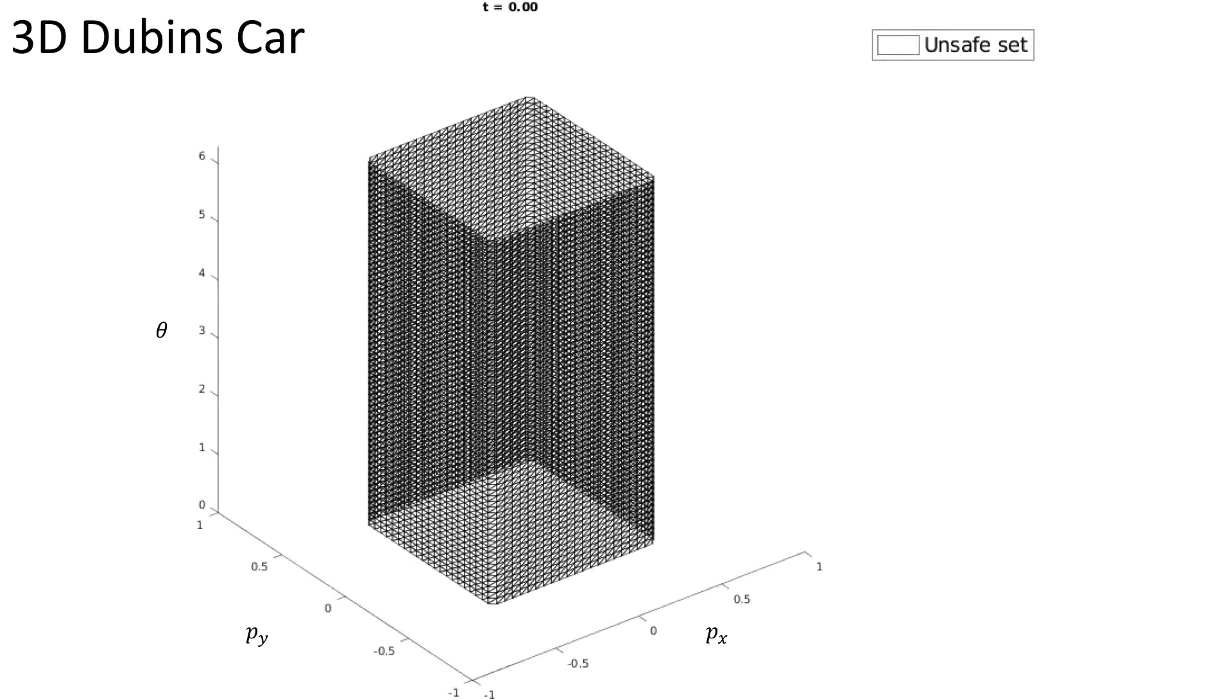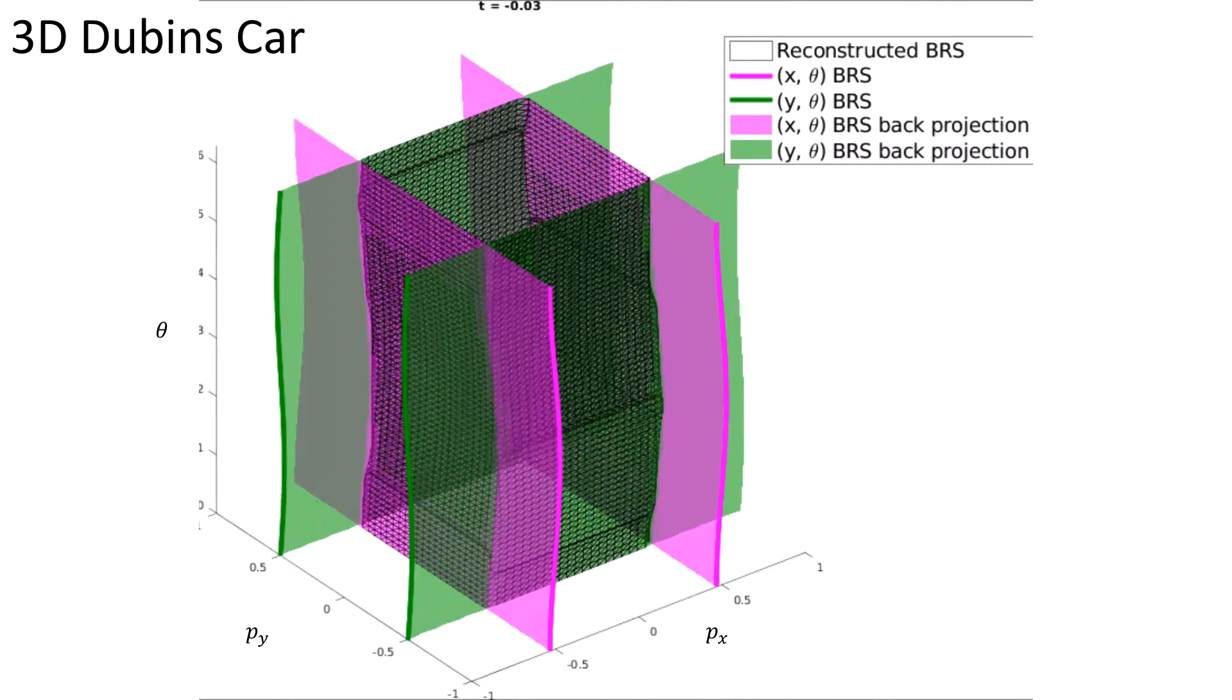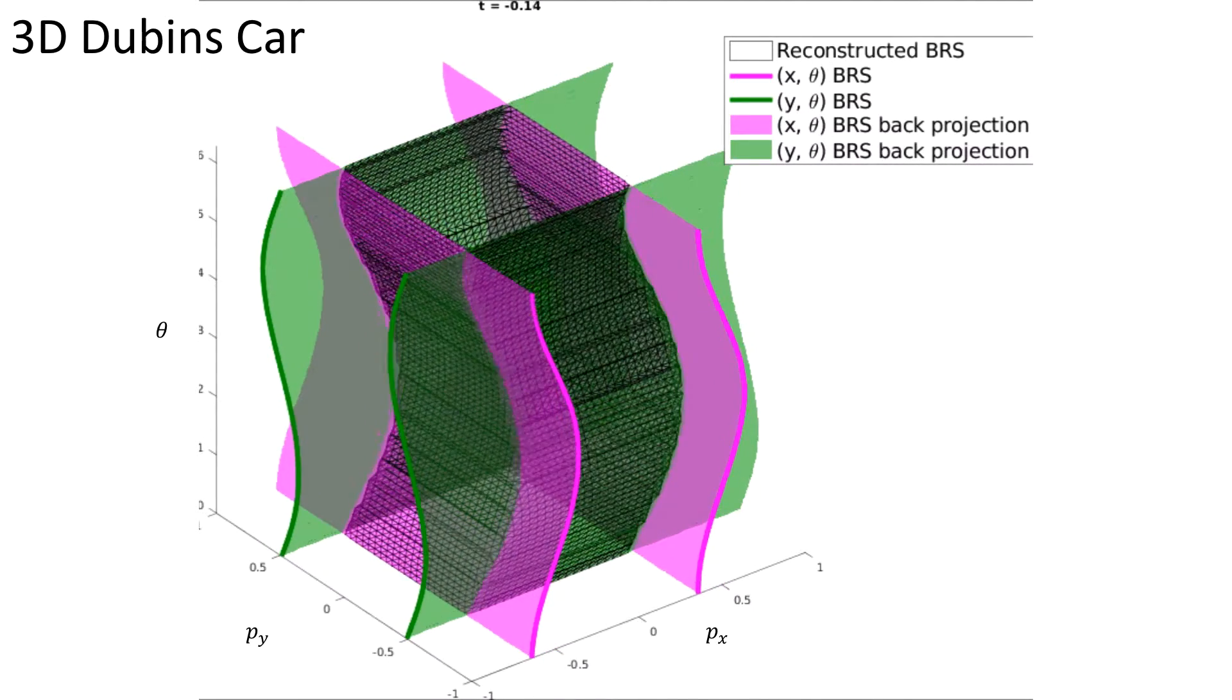Here is the unsafe set in 3D, representing an obstacle in position space. Using the split dynamics, we define the unsafe set for each subsystem. By back-projecting these 2D sets into 3D while evolving each subsystem, we can watch the full system evolve.